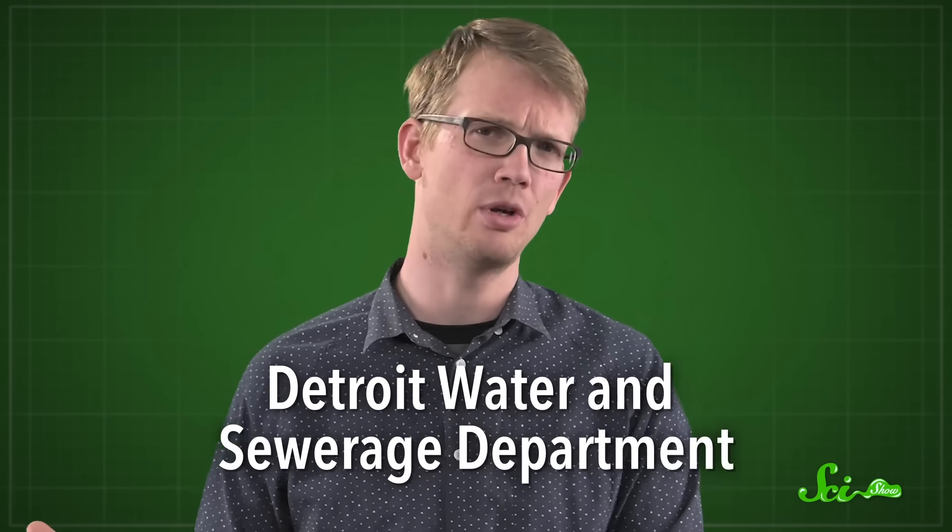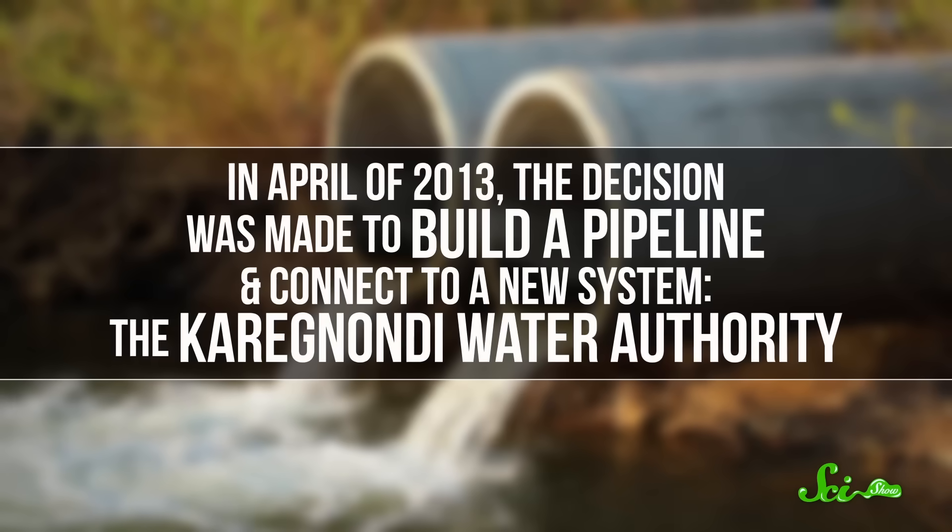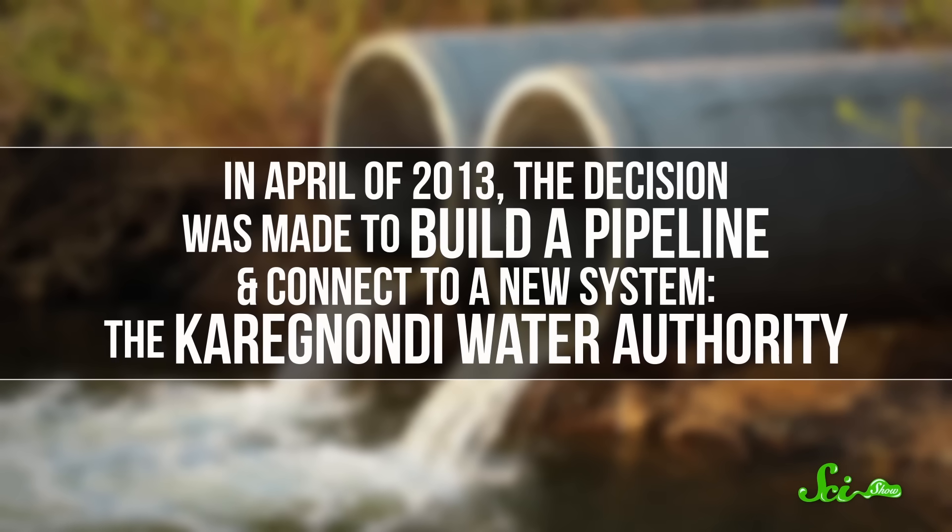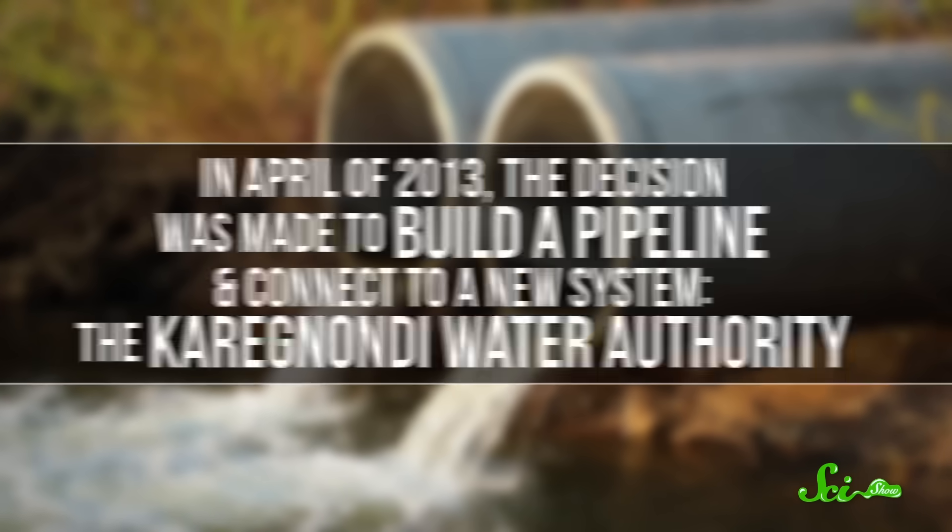For decades, the city's water had been piped in from the Detroit Water and Sewerage Department, which got its water from Lake Huron and treated it. But in April of 2013, the decision was made to build a pipeline and connect to a new system, the Karegnondi Water Authority.